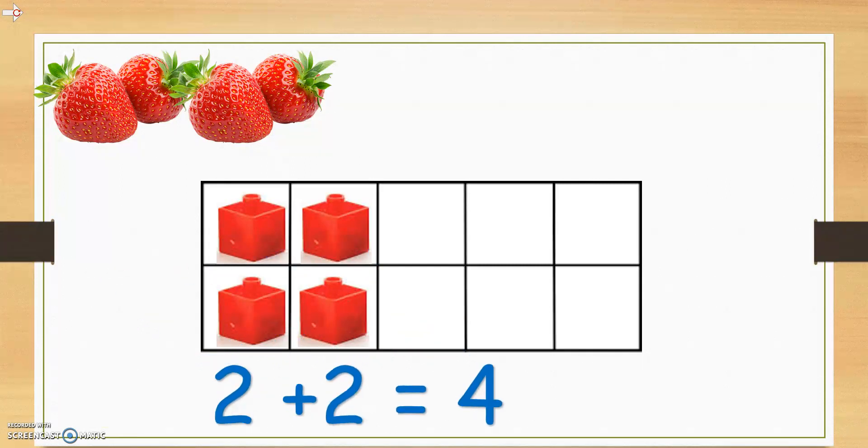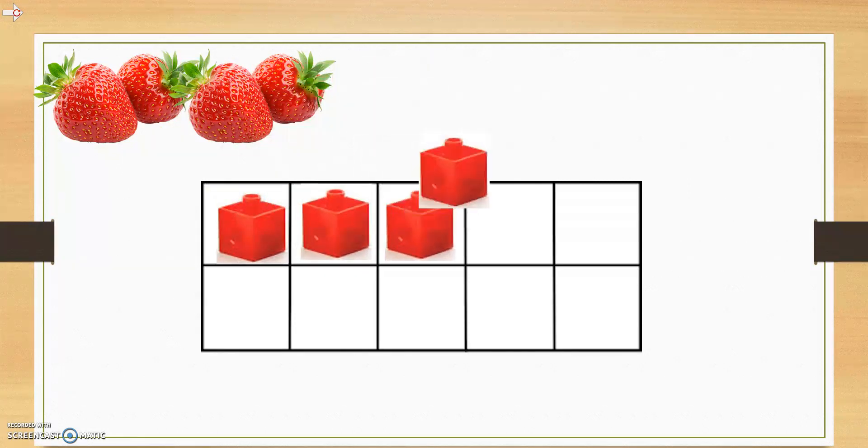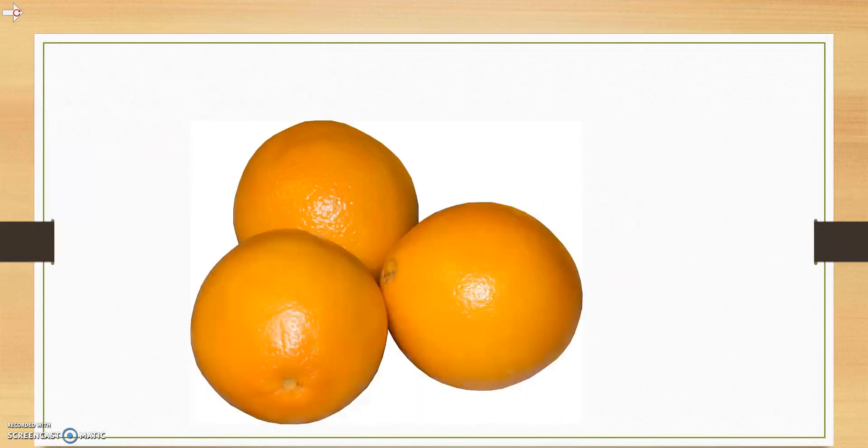As you see here, 2 cubes and 2 cubes gives us 4. So, 2 plus 2 equals 4. Also, we can put them in a line, as this makes it easier for us to count them. 1, 2, 3, 4. Showing us that we have 4 cubes and we can easily touch each cube as we count them.